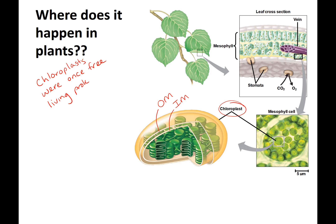In fact, chloroplasts were once free-living prokaryotes. This goes back to the theory of endosymbiosis, which we discussed with respect to mitochondria. The idea is that these photosynthetic prokaryotes were taken into a cell, creating the outer membrane. Instead of being digested, they decided to live happily ever after. 'Endo' means inside, 'symbiosis' means live together. Certain eukaryotic cells — such as those in some plants and some protists — can do photosynthesis.